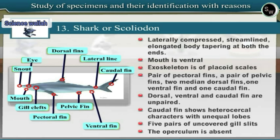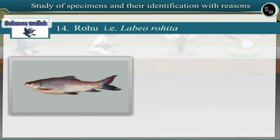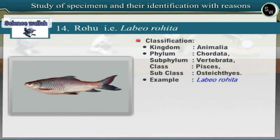Specimen 14: Rohu (Labeo rohita). Observe the specimen of Rohu. Rohu belongs to phylum Chordata, subphylum Vertebrata, superclass Pisces, class Osteichthyes. Rohu displays all characters of bony fish, such as aquatic mode of life, four pairs of gills covered with operculum, and bony endoskeleton, hence it is included under class Osteichthyes. Osteichthyes means bony fish. The scientific name of rohu is Labeo rohita.